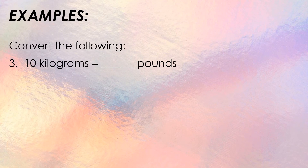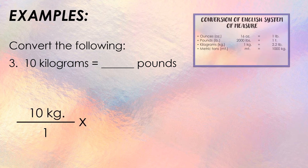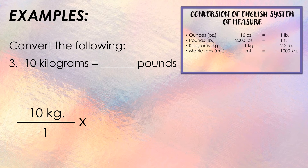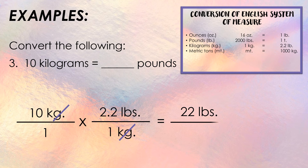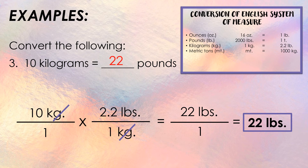Third example: 10 kilograms is how many pounds? Write 10 kilograms over 1, then use the formula: 1 kilogram equals 2.2 pounds. Place 1 kilogram in the denominator and 2.2 pounds in the numerator of the second fraction. Cancel the unit 'kilograms,' then multiply: 10 times 2.2 pounds equals 22 pounds over 1. Therefore, 10 kilograms is equal to 22 pounds.